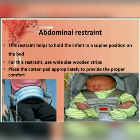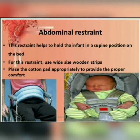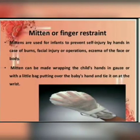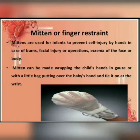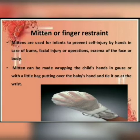Abdominal restraint helps to hold the infant in a supine position on the bed. Use white-sized wooden strips and place a cotton pad appropriately to provide proper comfort. Mittens or finger restraints are used for infants to prevent self-injury by hands in cases of burns, facial injury or operations, and eczema of the face or body. A mitten can be made by wrapping the child's hands in gauze or with a little bag put over the baby's hand and tied at the wrist.